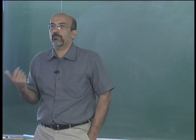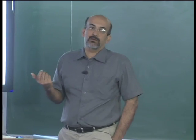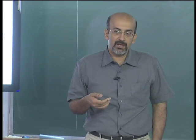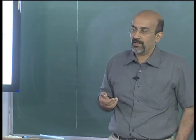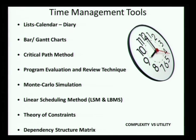With PERT you are getting a little probabilistic. Monte Carlo simulation is again probabilistic and represents uncertainty. The linear scheduling method or location-based management system brings a slightly different view to scheduling. Then there is the theory of constraints, the dependency structure matrix — the list goes on.